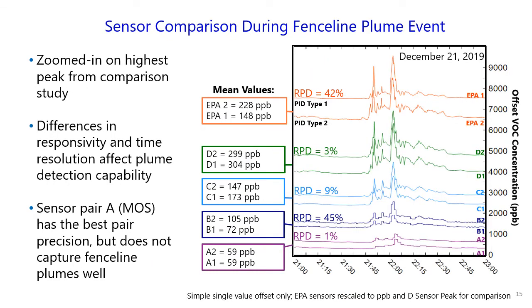This slide shows a zoom-in on the signal event that all sensors picked up during December 21st, 2019. Again, the lowest relative percent difference was between the A sensors. However, even though these sensors agree and are the most precise, they do not depict the elevated signal as well as some of the faster but less precise sensor pairs. The EPA sensors give us a lot more information about this signal event than the A sensors. Analyzed from the community perspective without our temporal baseline correction, the drift that remains is one reason the mean values are still very different, even between co-located sensors.